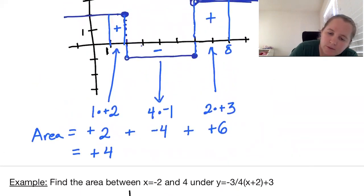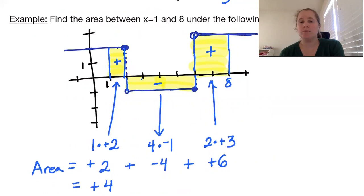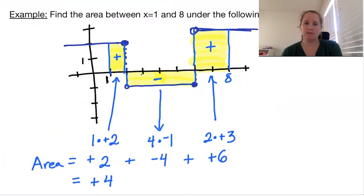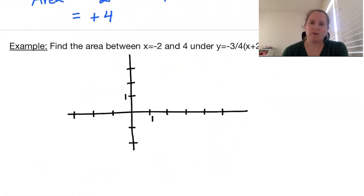So I'm just going to do shading. We have this area, this area, and this area. Again if it's above the x-axis it's positive, if it's below it's negative. And let's do one more example.